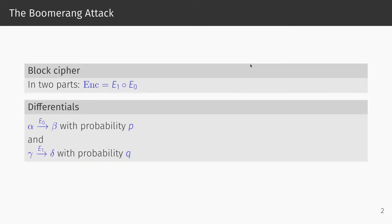Let us start with a description of the object of our interest, the boomerang attack. The boomerang attack is a cryptanalytic technique invented in 1999 by David Wagner, in particular to break the block cipher Coconut98, but more generally to disprove the idea that the absence of high-probability differentials implies security against differential cryptanalysis. The basic idea is to connect two differentials that each cover one part of the cipher — one for the top part, one for the bottom part — to create a differential structure that covers the entire cipher.